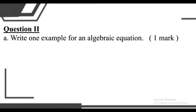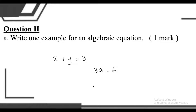Next question: write one example for an algebraic equation. You can write the example on your own — we need only one example, and if it is correct it carries one mark. Examples include: x plus y equal to 3, or 3a equal to 6, or 6p plus 3 equal to q — all are algebraic equations.